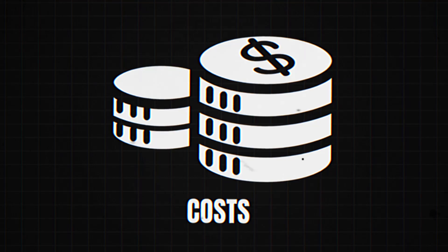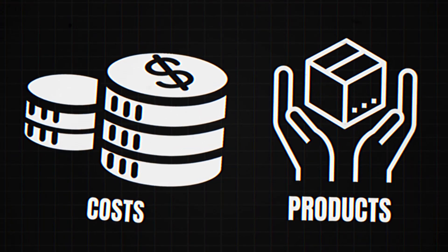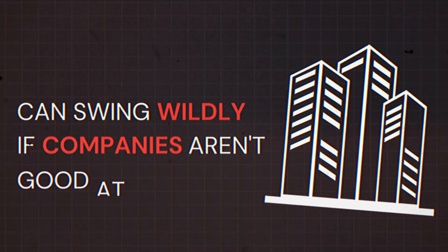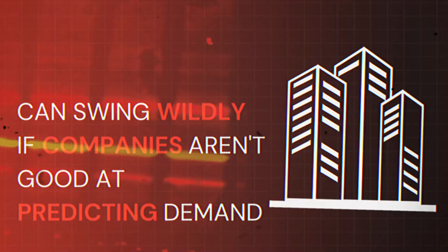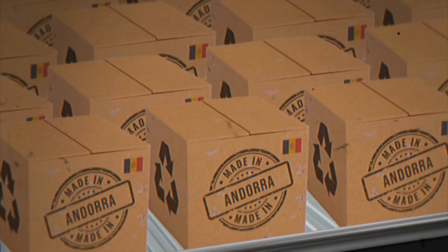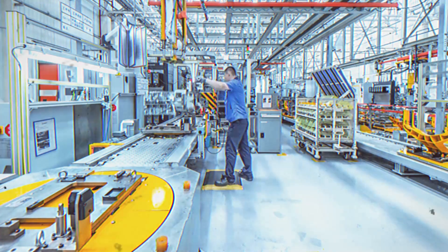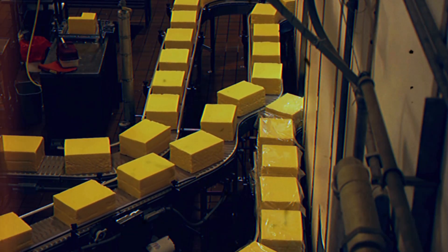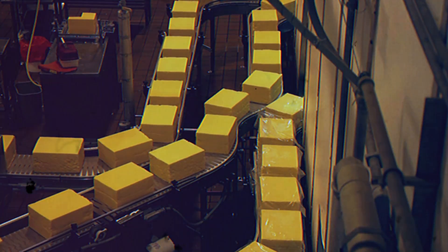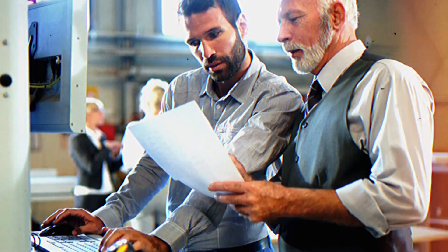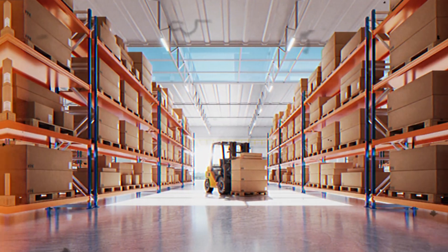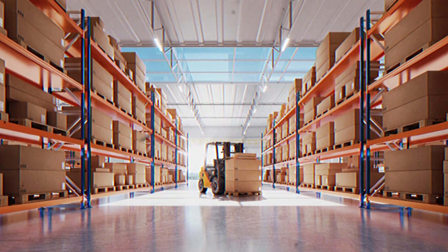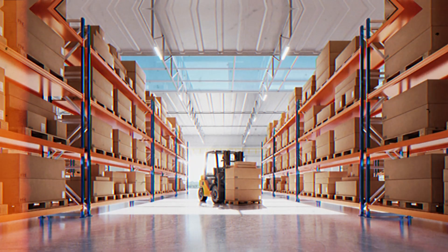The costs related to making, storing, and moving products can swing wildly if companies aren't good at predicting demand. For example, if a company makes more products than needed, they spend too much on production and might pay more for storing the excess. If they make too little, they might have to pay extra to rush more products into production or pay for expedited shipping to meet customer demand. These fluctuations make it hard for companies to plan their budgets and can reduce their profits.